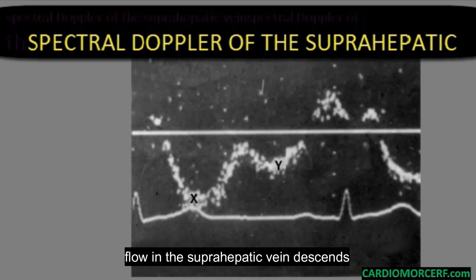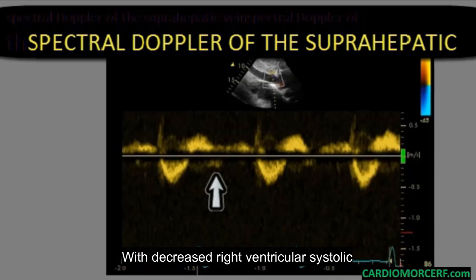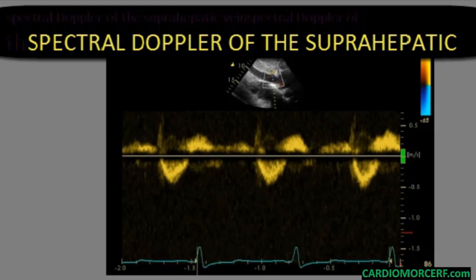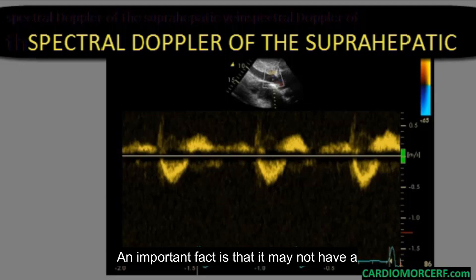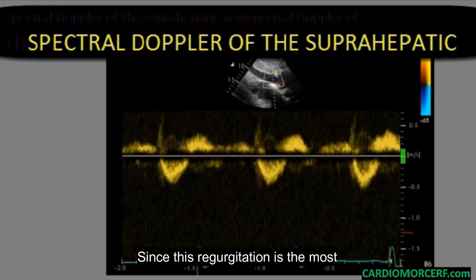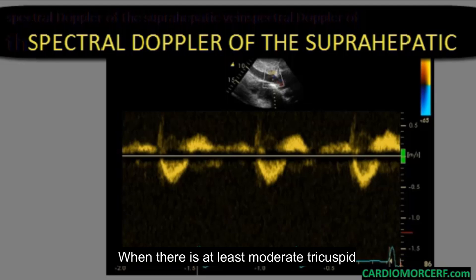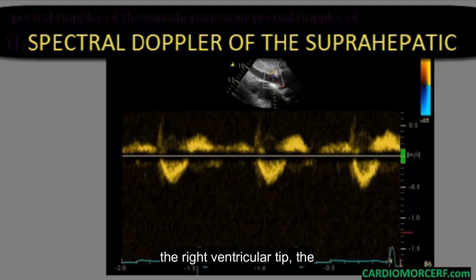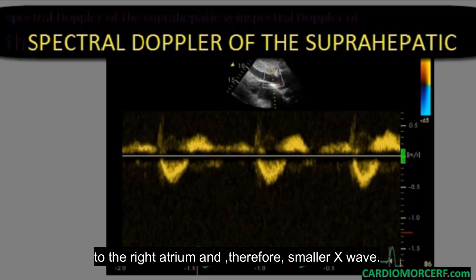With this piston effect, flow in the suprahepatic vein descends toward the inferior vena cava and right atrium. With decreased right ventricular systolic function, this piston effect will diminish. As seen in this case, the X wave is well reduced — smaller than Y and almost non-existent. An important fact is that there must not be tricuspid regurgitation in this evaluation, since regurgitation is the most common cause of X wave reduction or even its inversion to a positive deflection. When there is at least moderate tricuspid regurgitation, although there is the piston effect pulling the atrial floor toward the right ventricular apex, the regurgitation increases right atrial pressure, which decreases blood entry to the right atrium and therefore produces a smaller X wave.